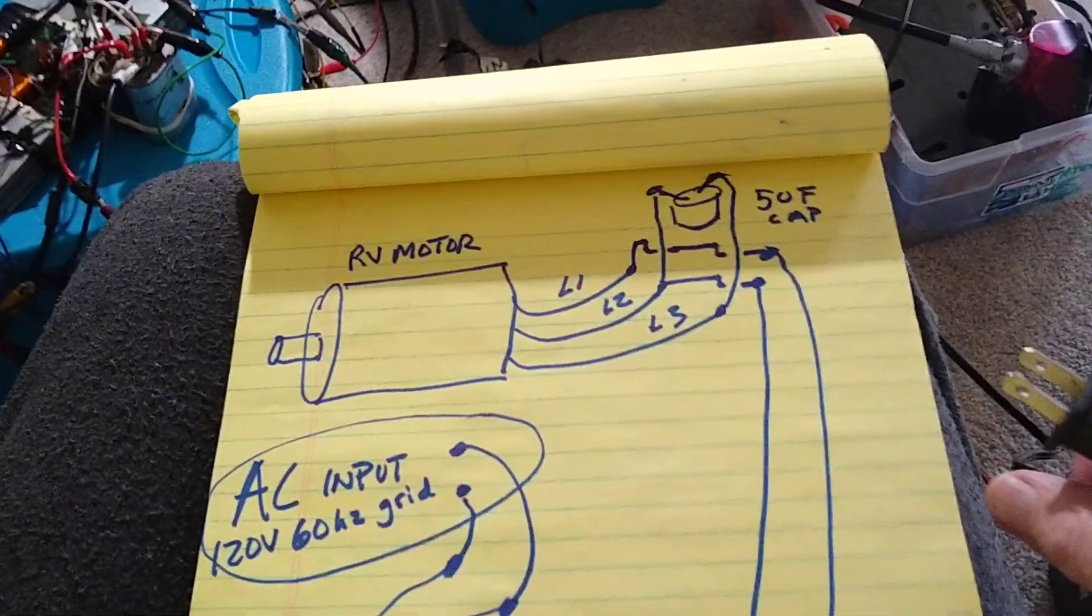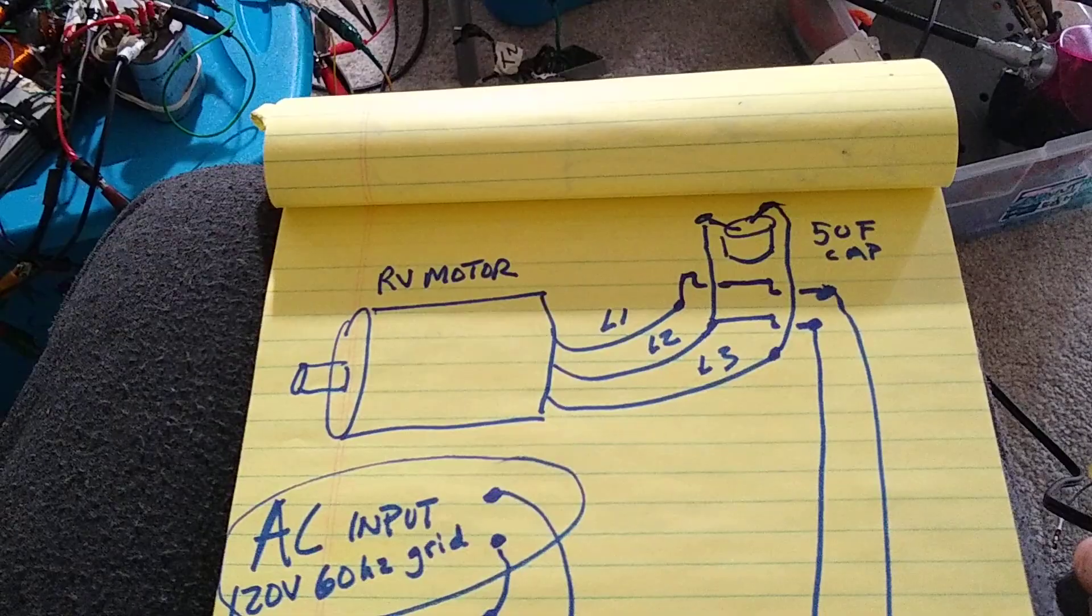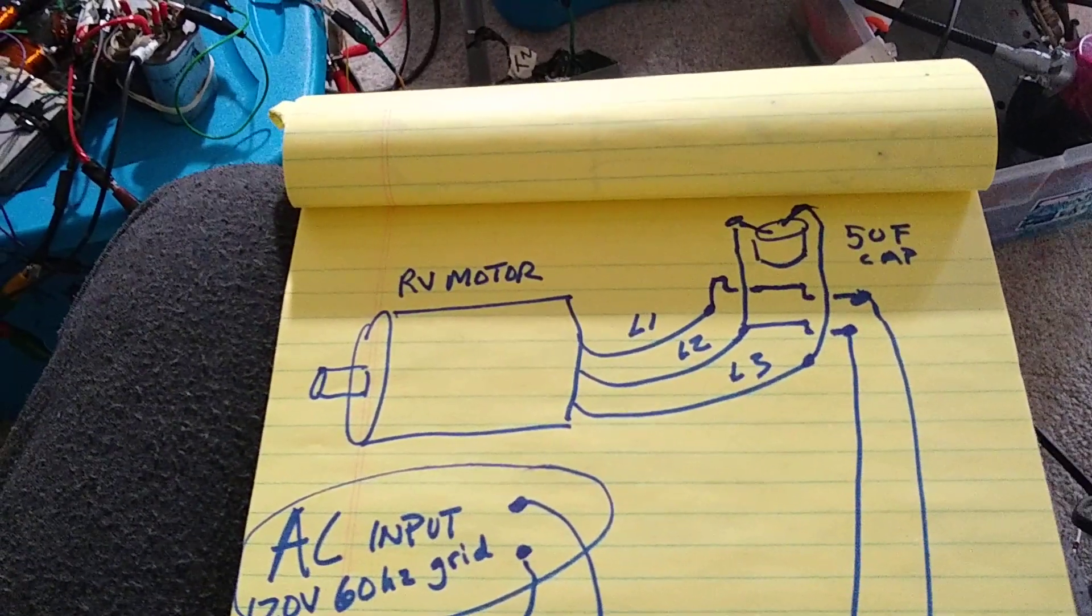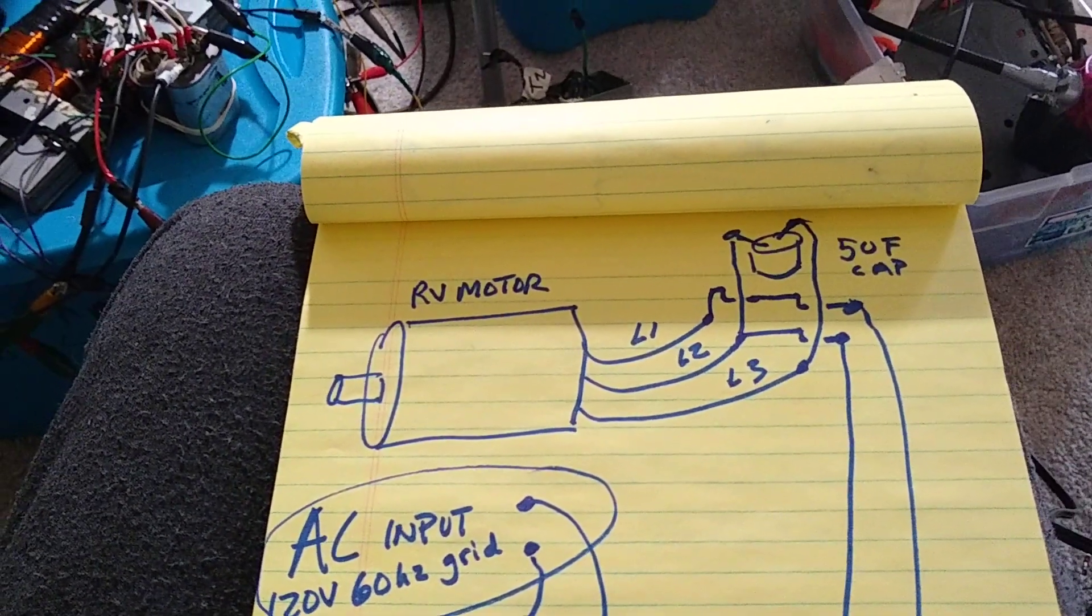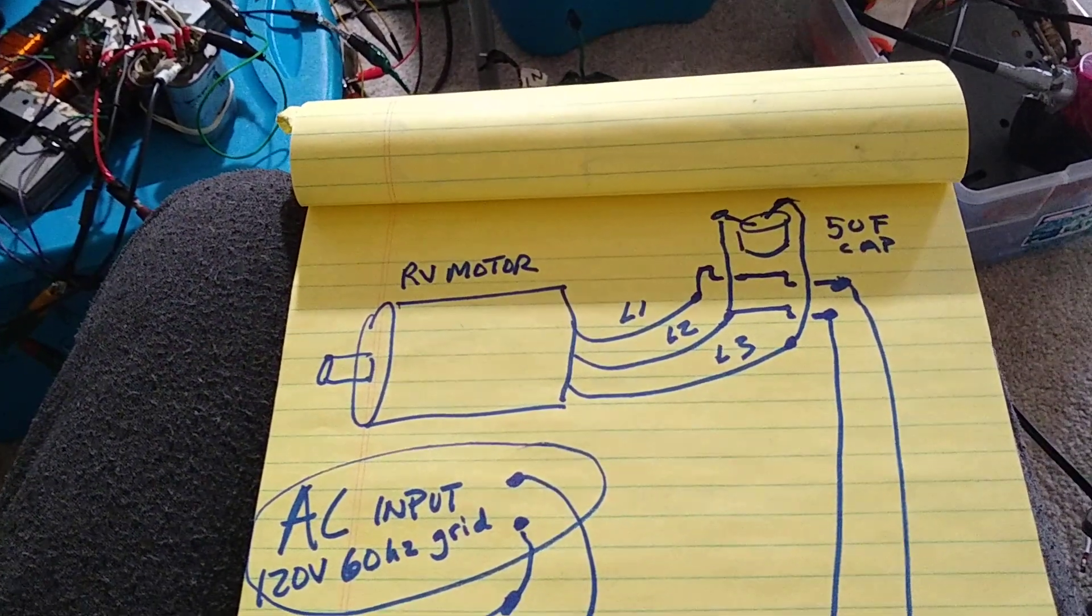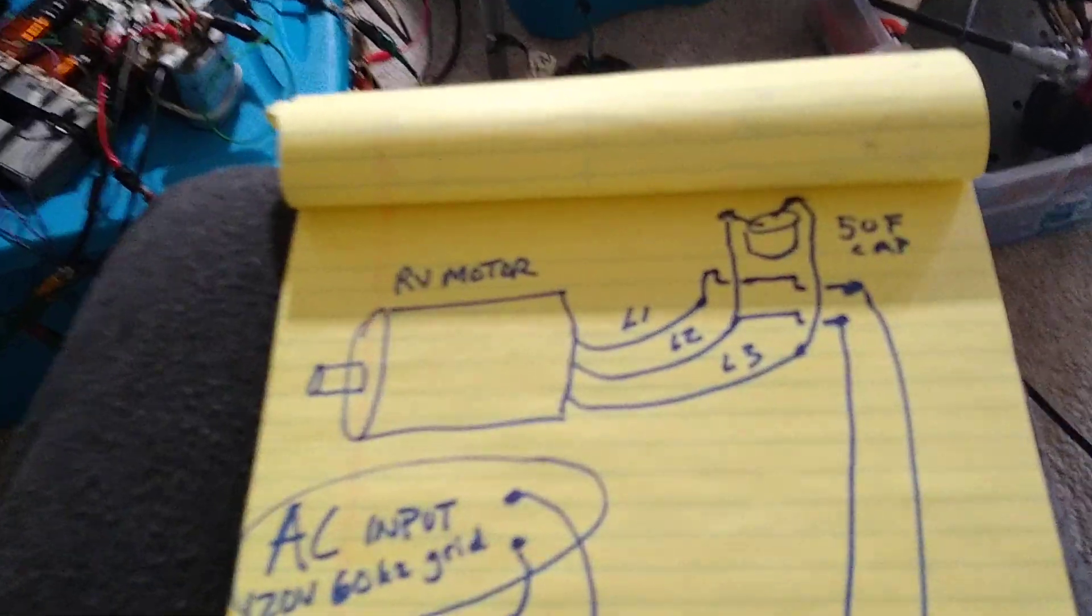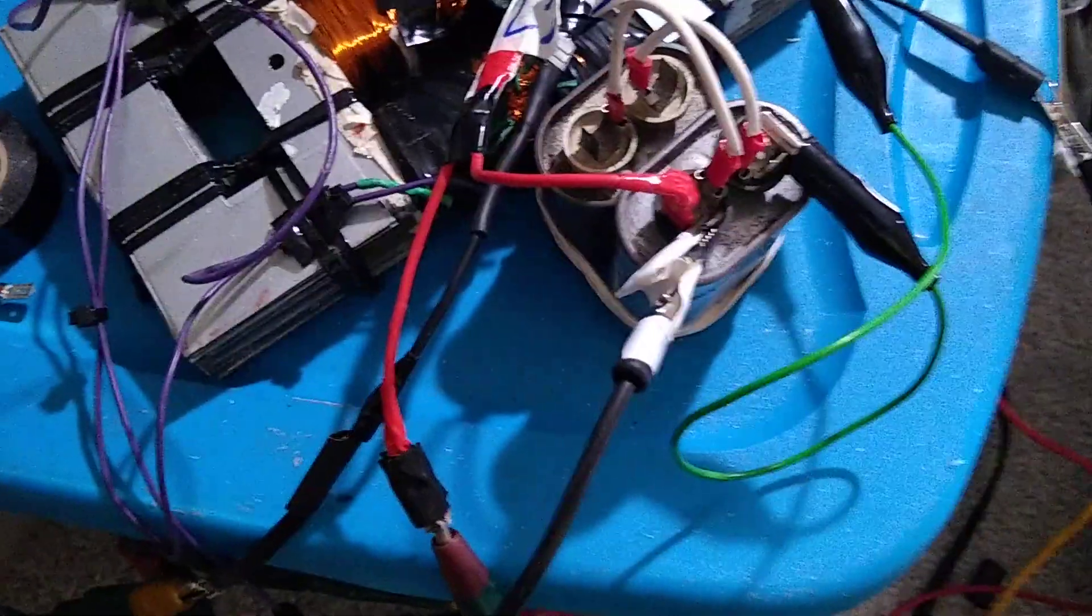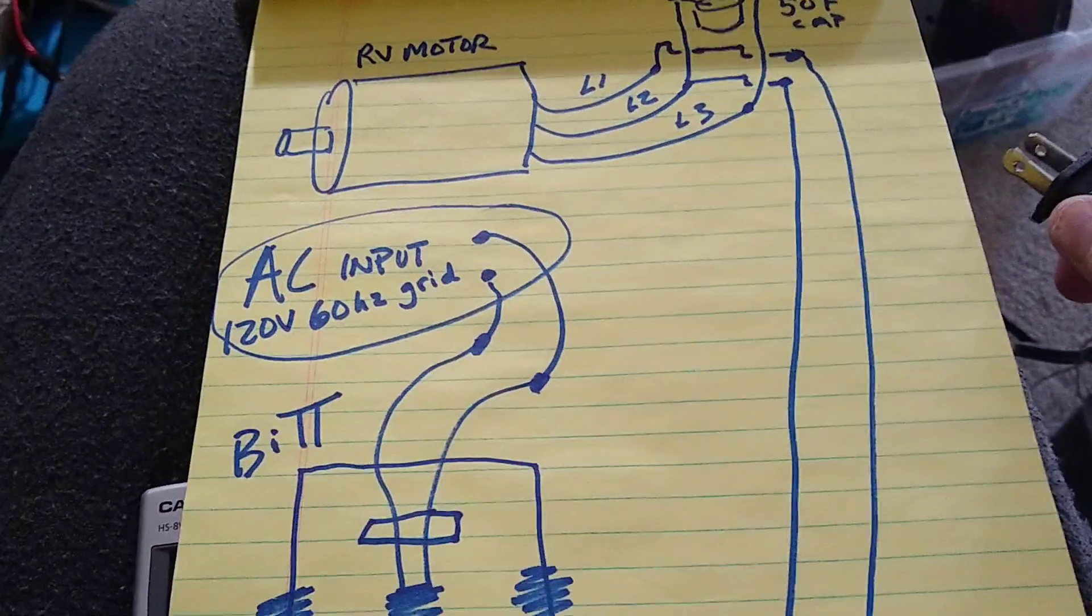The 5UF run cap goes across L2 and L3. It's your basic rotaverter three-phase AC motor way to hook single phase to it, and you have that run cap. So I have a 5UF run cap across L2 and L3. So that's what I'm doing now.